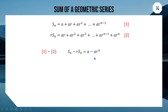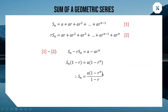Factoring the left side gives Sn(1 - r), and factoring the right side gives a(1 - r^n). Dividing both sides by (1 - r) gives us the formula for the sum of the first n terms of a geometric series. You don't really need to know how this is derived — I'm just showing where it comes from. All you need is the first term a, the value of r, and the number of terms n.